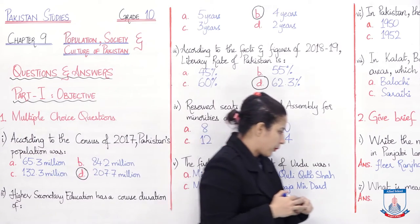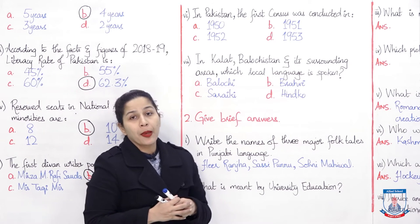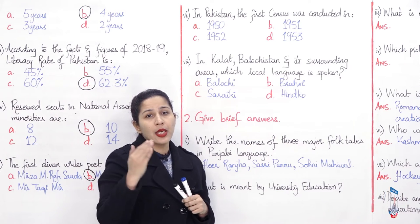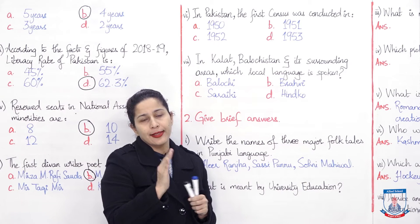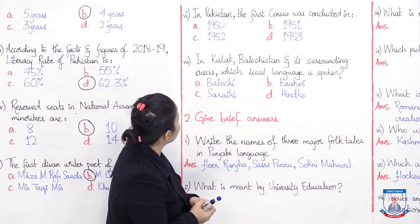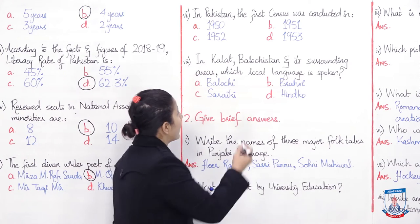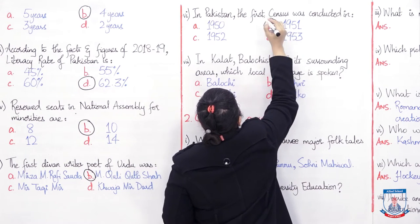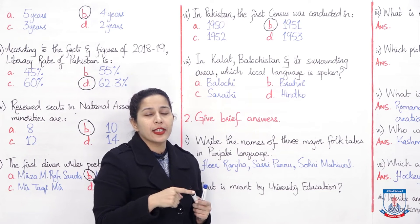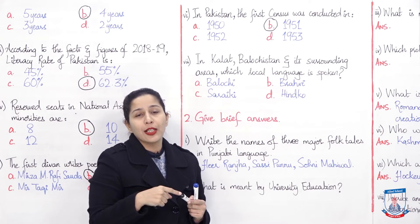Next question: In Pakistan, the first census was conducted in? When was the first census in Pakistan? We have four options: 1950, 1951, 1952, 1953. The answer is that after Pakistan was formed in 1947, the first census was in 1951. After that it was in 1961, then 1972, then 1989, and so on. The last one was in 2017, in which 207.7 million population was recorded.